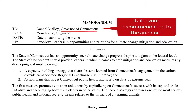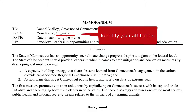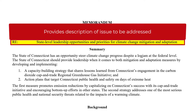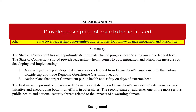Your recommendations should be tailored to that audience. You should also identify your affiliation on the memo. You can make up an organization for yourself or write as a UMGC Environmental Management student. Be sure to use a comma after a name and before their title. Finally, the subject or RE line should provide a succinct description of the issue to be addressed.